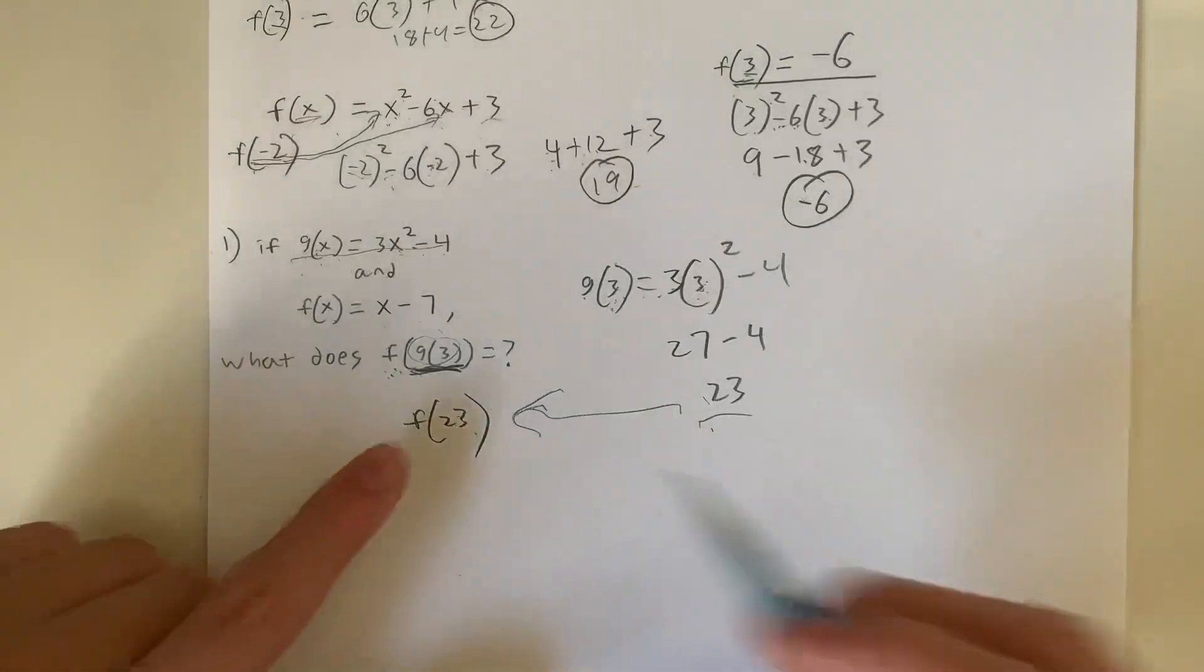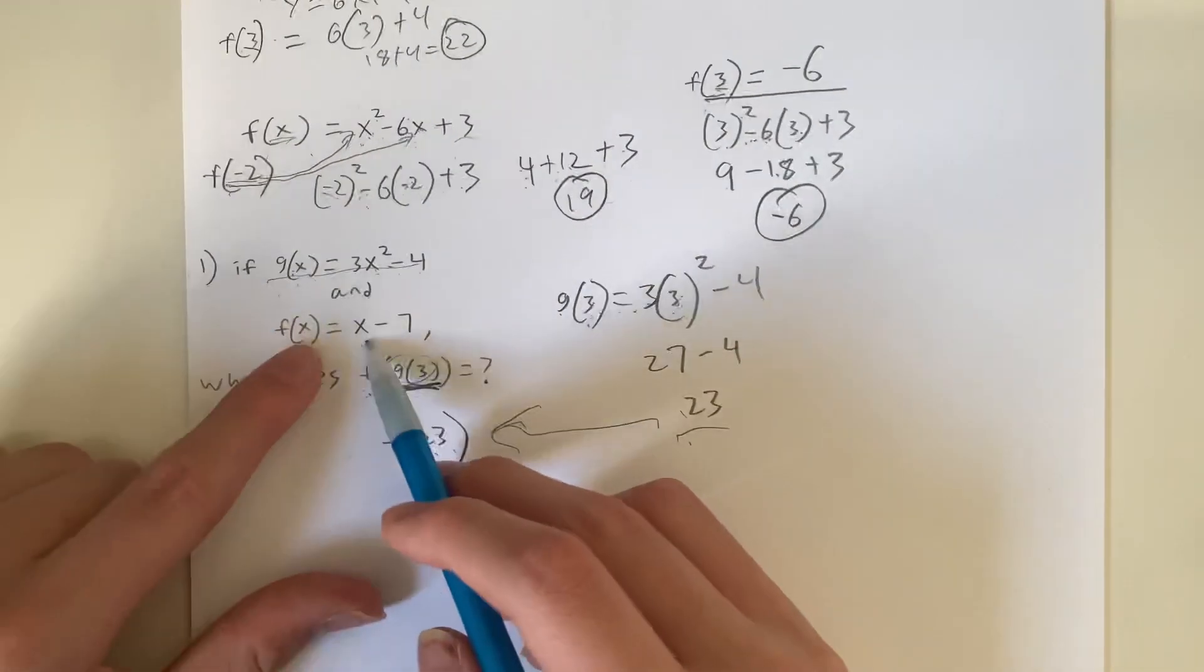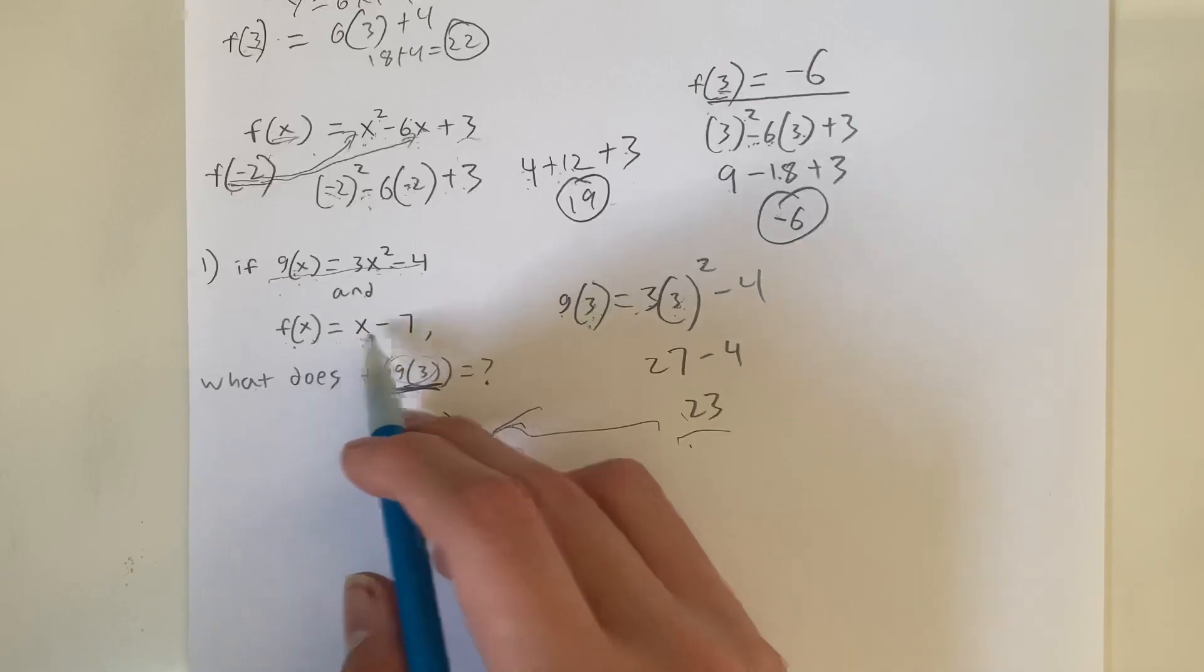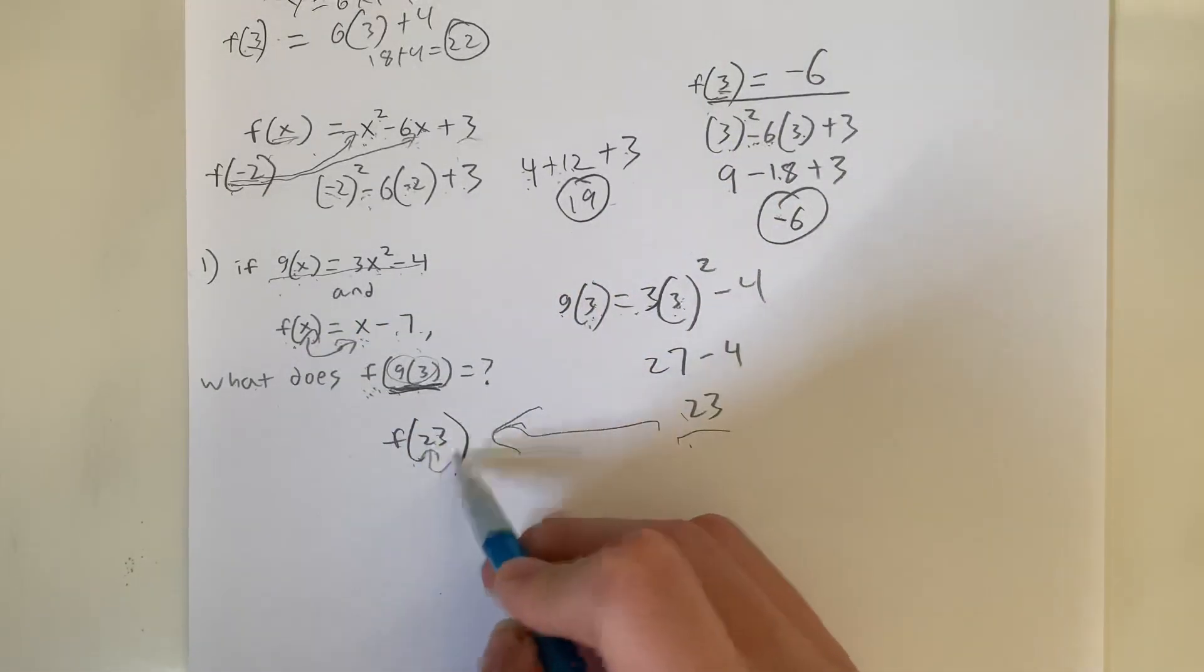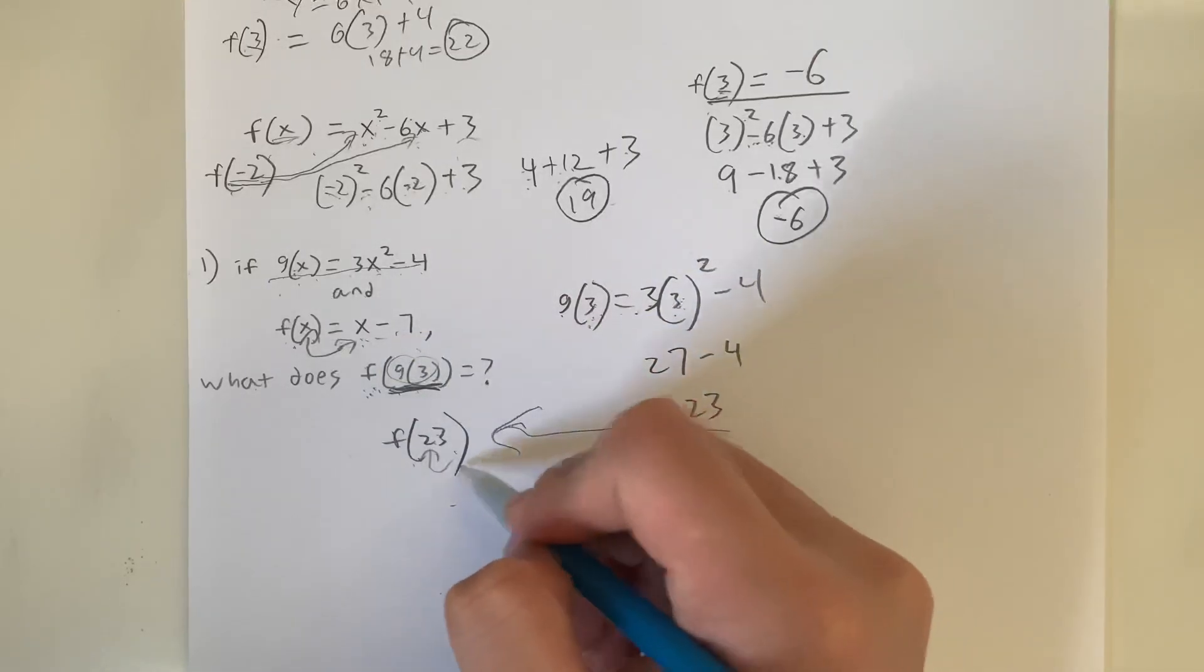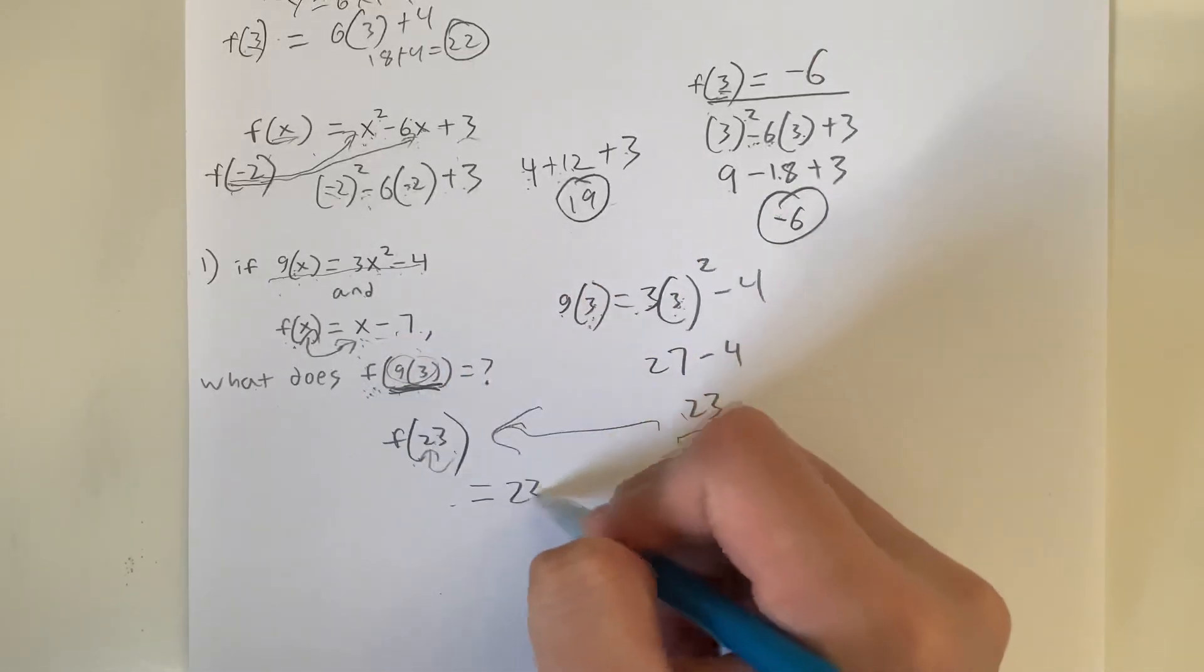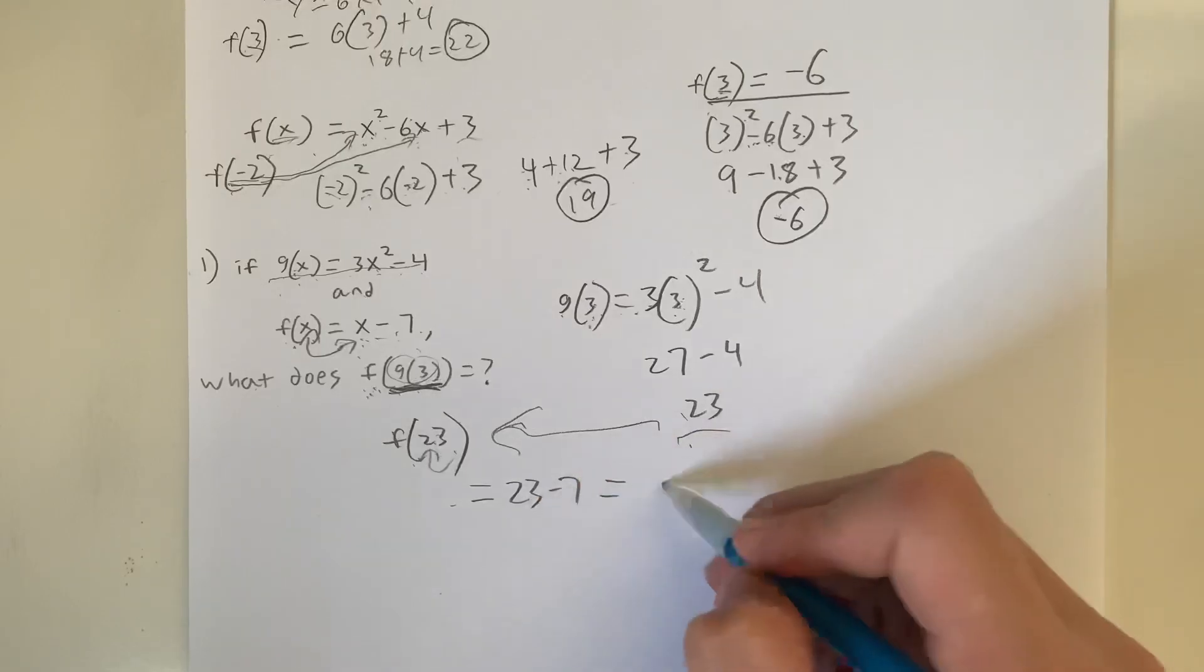And now what we do, simply we just evaluate f(23). So f(x) is equal to x minus 7. So we substitute this value x for that. We substitute 23 for the value of x, giving us f(23) is equal to 23 minus 7. 23 minus 7 is 16.